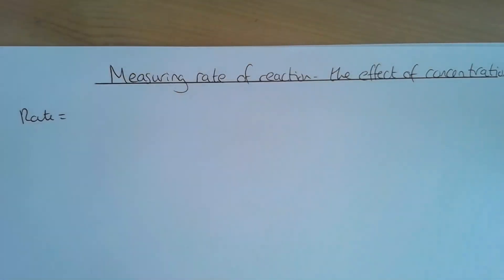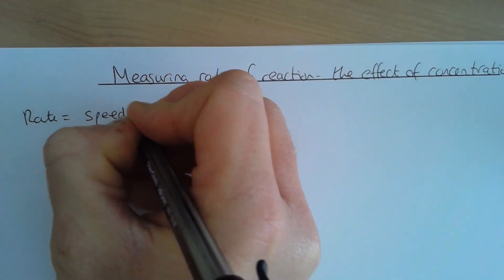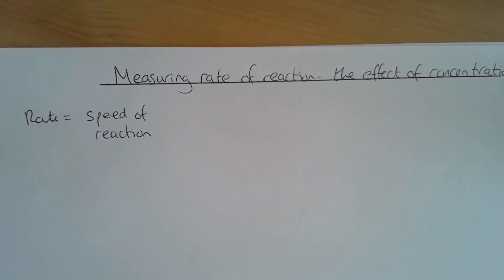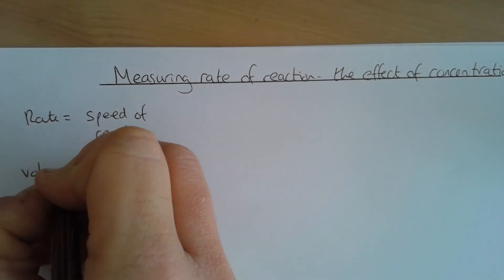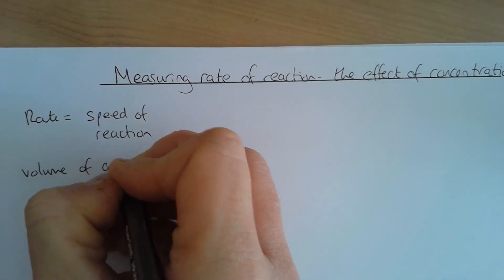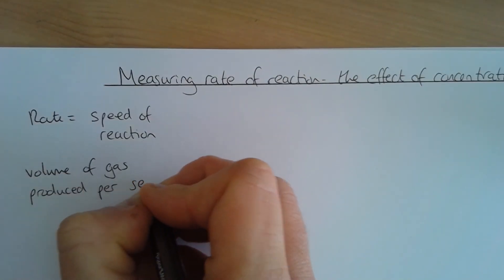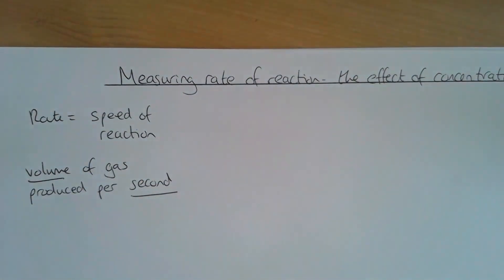rate is actually equal to effectively the speed of the reaction. We're going to be looking at the volume of gas produced per second. So if we think about volume and second there, we're going to need to be able to measure the volume of our gas being produced, and per second means we're going to need to time it.